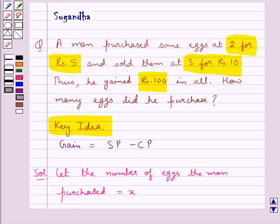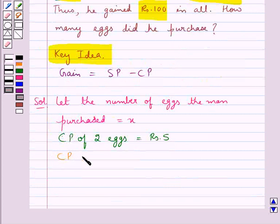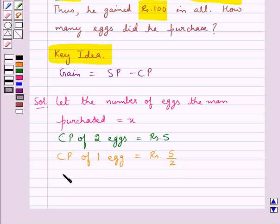Now in the question it's given that cost price of 2 eggs is Rs. 5. So from here we have cost price of 1 egg is equal to Rs. 5 upon 2. This means that cost price of X eggs that the man purchased would be equal to Rs. 5 upon 2 into X.